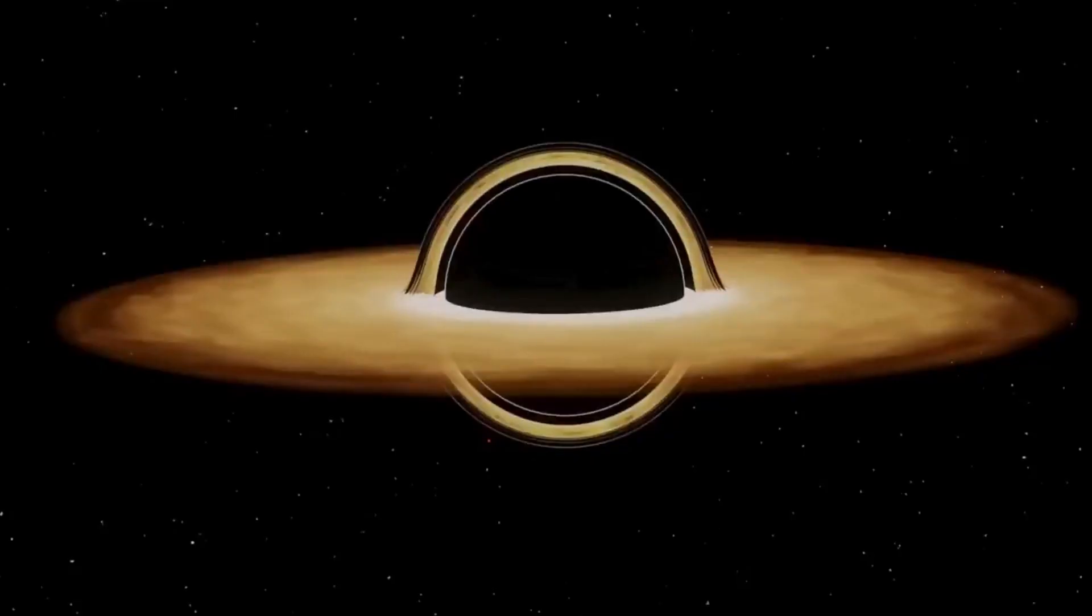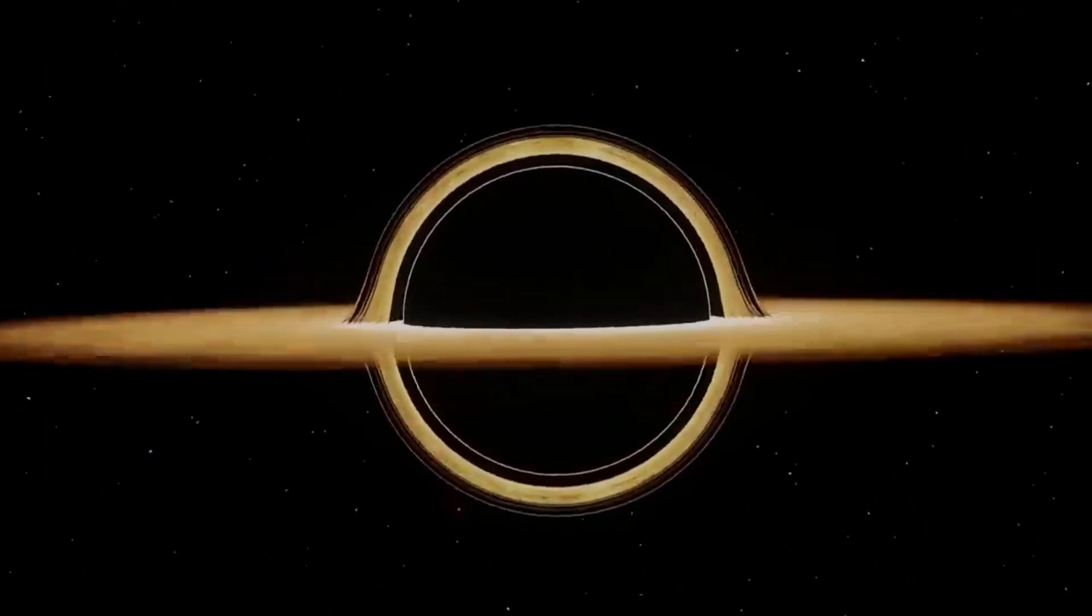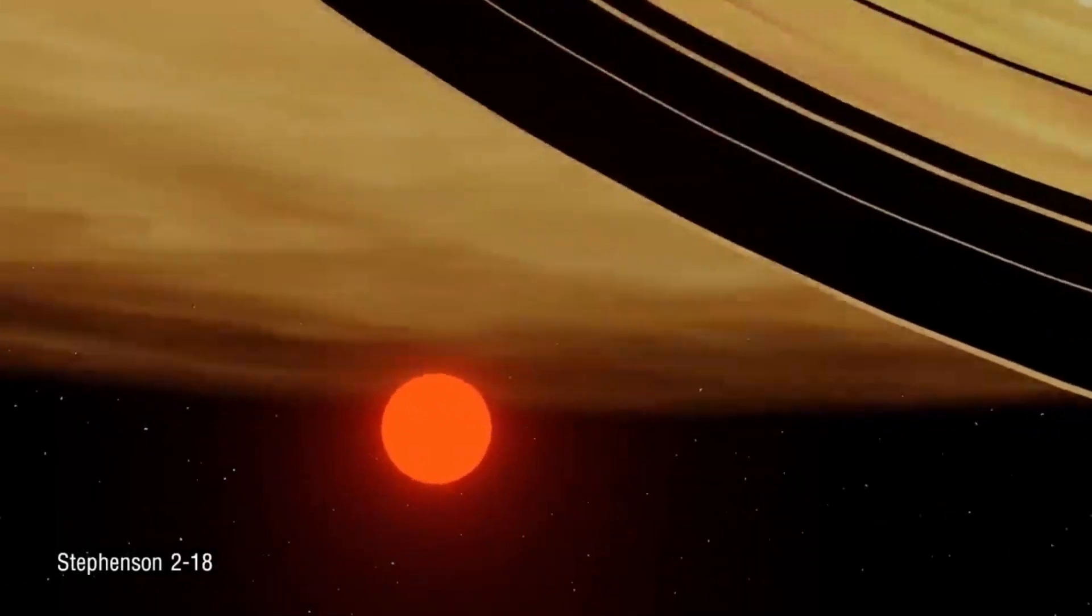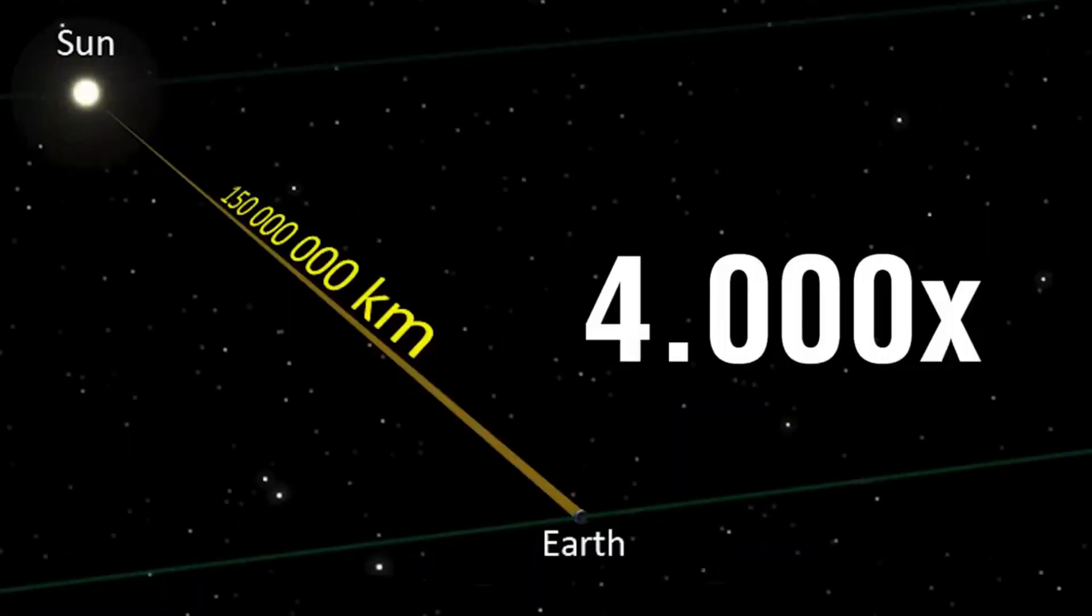The event horizon of this black hole has a diameter of 590 billion kilometers, which is nearly 200 times larger than the largest known star, Stephenson 218, and roughly 4,000 times the distance from the Earth to the Sun.